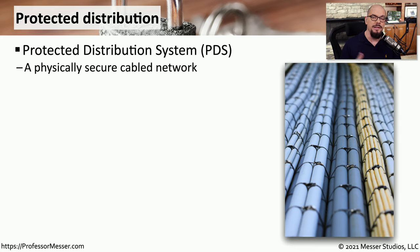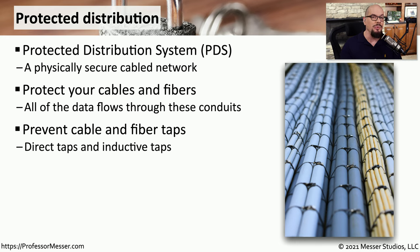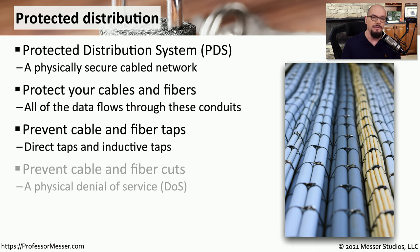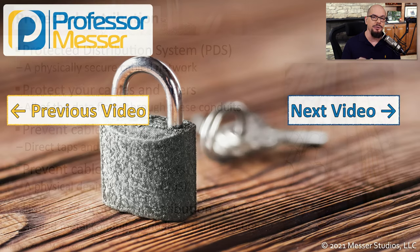In some very secure facilities, we have to think about the access that people might have to the cabling and fiber running our networks. This is a protected distribution system, or PDS, and it usually requires that you have all of your network cables and infrastructure behind some type of protected environment. This means all of your cables and fibers may be inside of a metal conduit, which would effectively prevent somebody from gaining physical access to those cables. This also means that someone wouldn't be able to break a cable apart and put their own tap in the middle, gaining access to all of the data flowing over that cable. It might also prevent a denial of service, as no one would be able to cut or modify any of those cables, and periodic audits ensure the ongoing security of your protected distribution system.